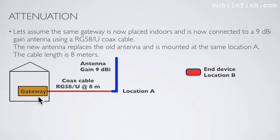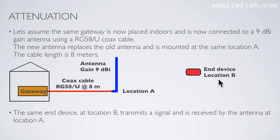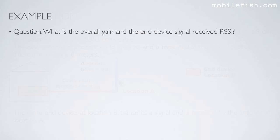Now let's assume the same gateway is placed indoors and is connected to a 9 dBi gain antenna using an RG58-U coax cable. The new antenna replaces the old antenna and is mounted at the same location A. The cable length is 8 meters. The same end device at location B transmits a signal and is received by the antenna at location A. The question is: what is the overall gain and the end device signal received RSSI?